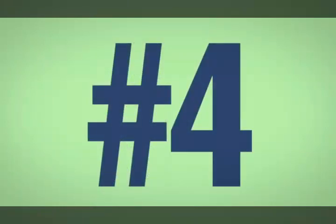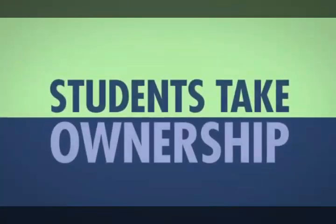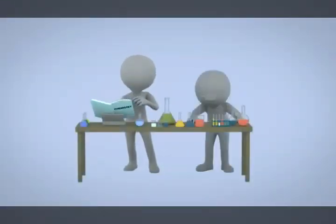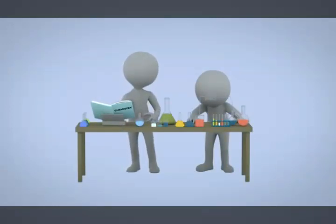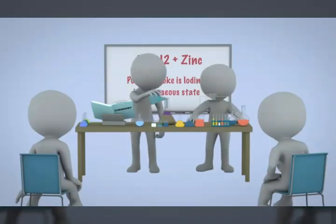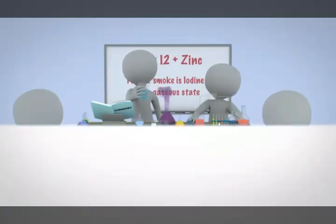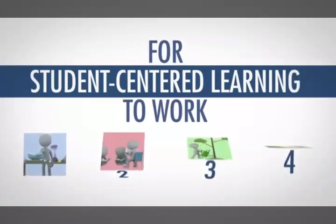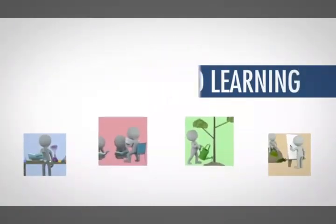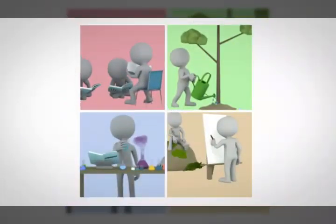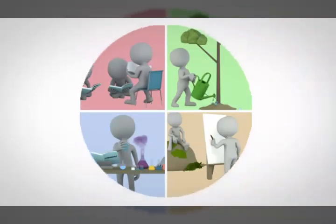And number four: the last key to student-centered learning is that students take ownership. Don't make a decision about students without students. They play a direct role in their own success, actively engaging with the process to ensure the impact is lasting and meaningful. For student-centered learning to work, all four of these principles must work together. This is not an à la carte approach — it's reimagining education so it works for all students.